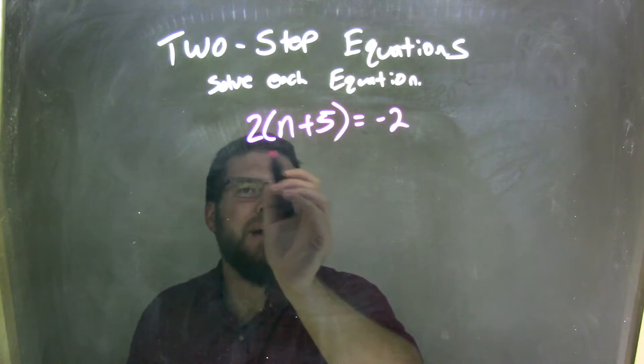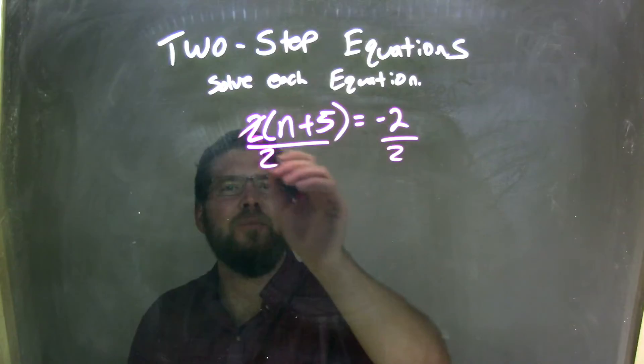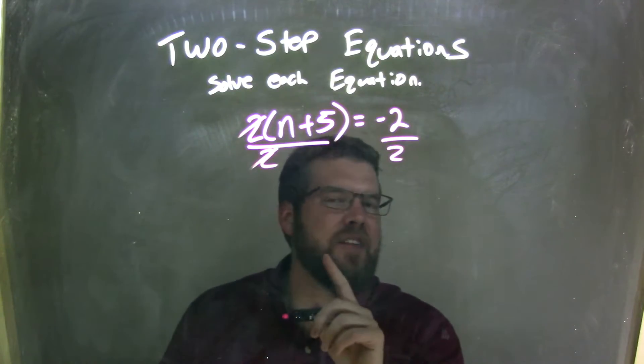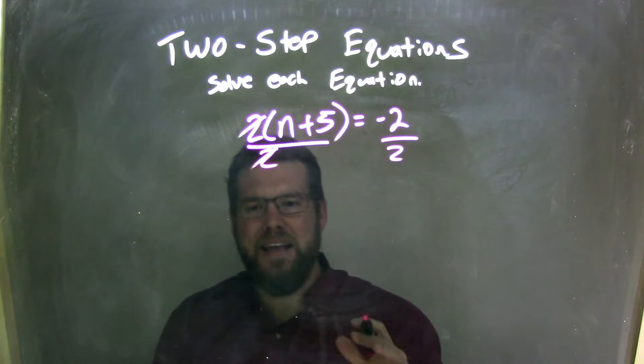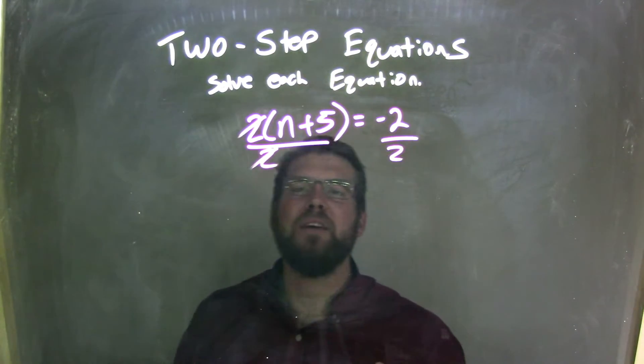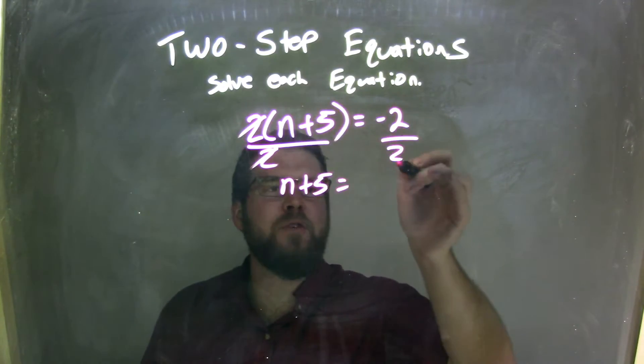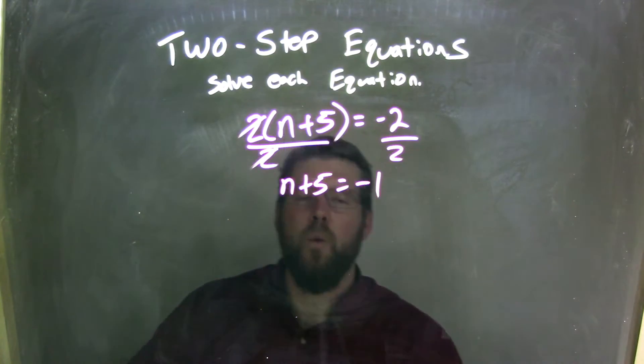So I'm going to divide by 2 first. Divide by 2 to both sides, and what that does is allows me to get rid of that multiplication that's happening. So it's almost like thinking reverse order, in a sense, when you're solving it like this. So the 2's cancel, leaving me with n plus 5 on the inside, and negative 2 divided by 2 is just negative 1.